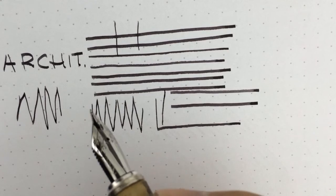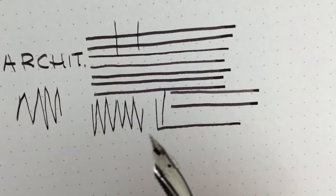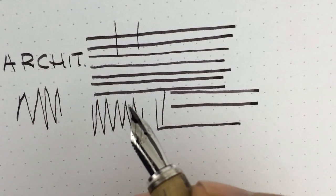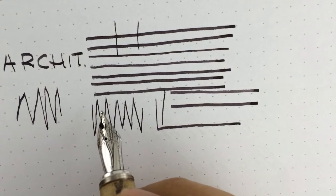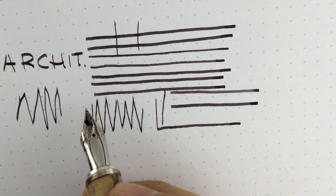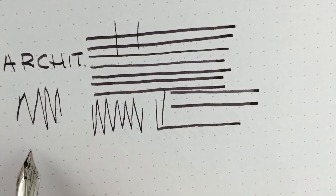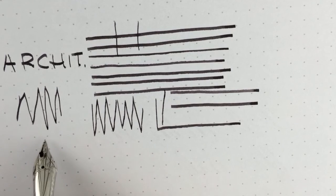So for an architect point, that is not supposed to be the best way to write. So I advise that with this kind of nib, you write moving your hand instead of your fingers.